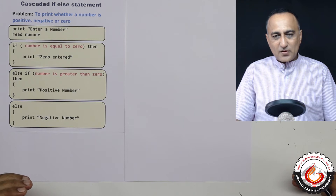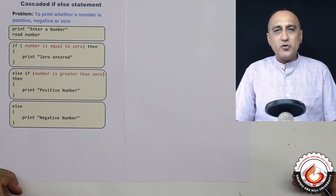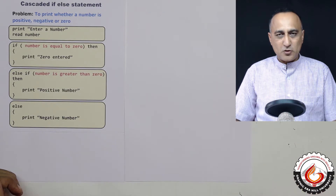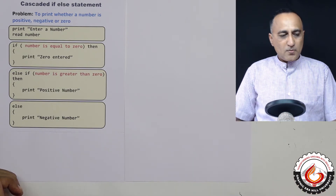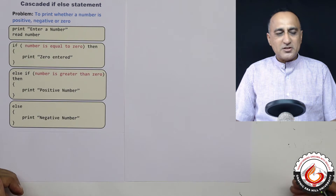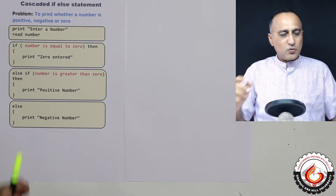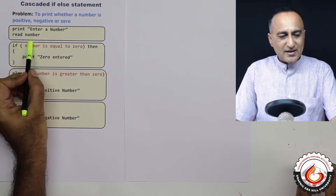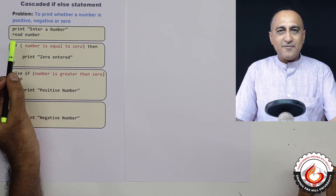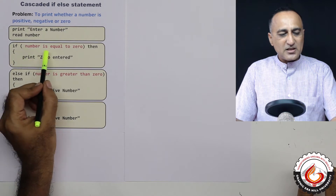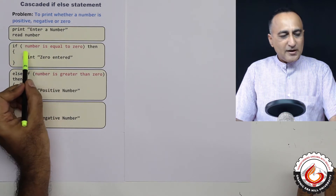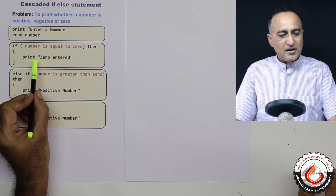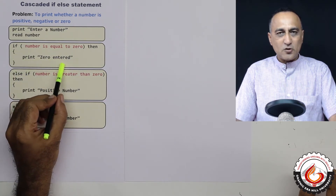Let's say we have a problem where we want to determine if a number is positive, negative, or zero. First, what we will do is ask the user to enter a number. Once the user enters the number, we will first check whether the number is equal to zero. If the number is equal to zero, then the message 'zero is entered' or 'the number is zero' is going to be printed.